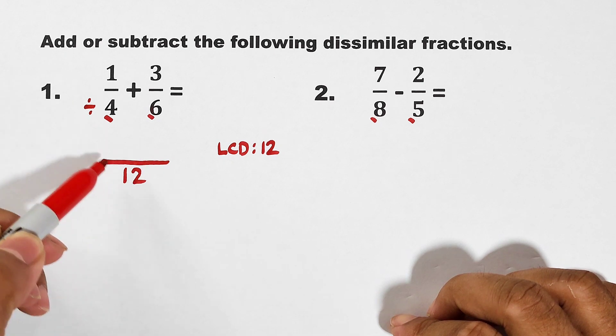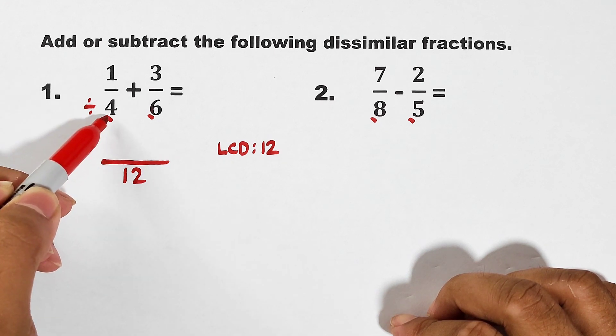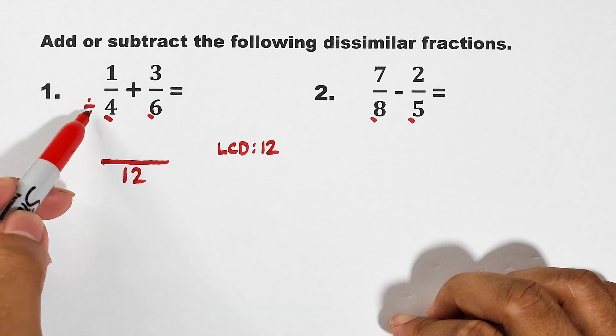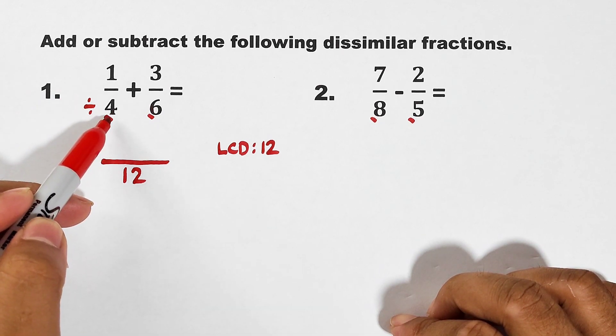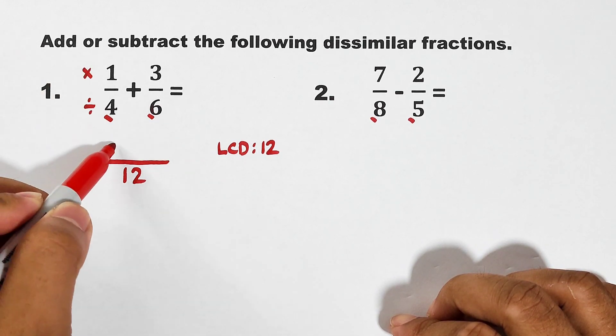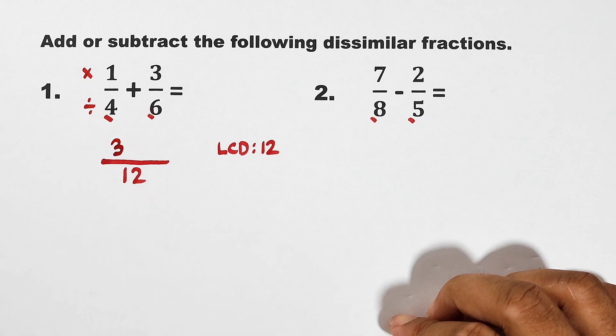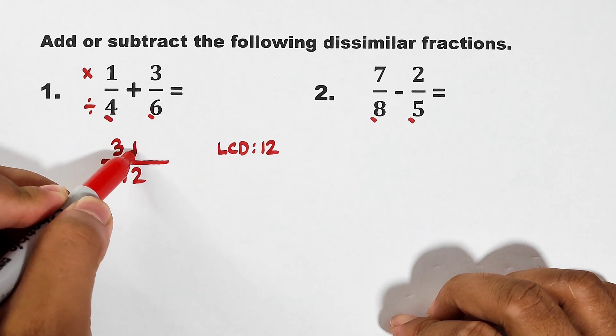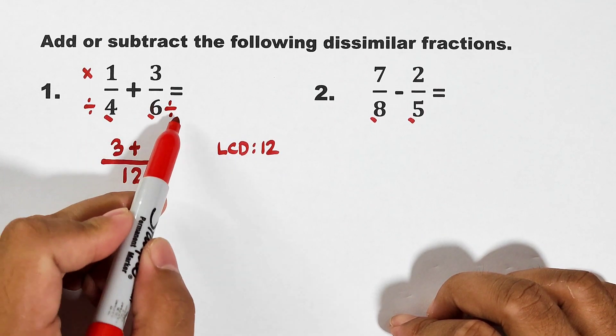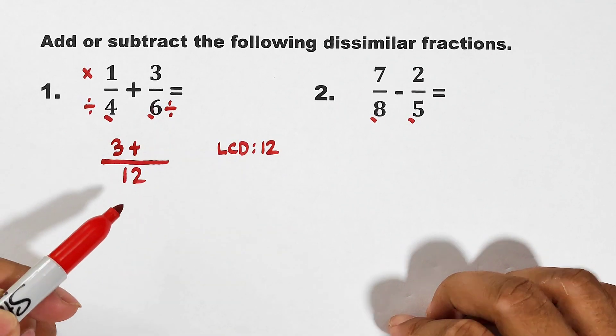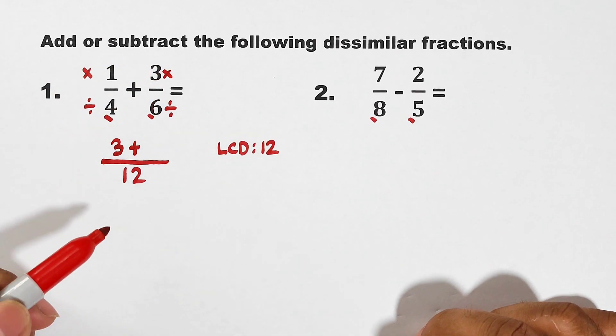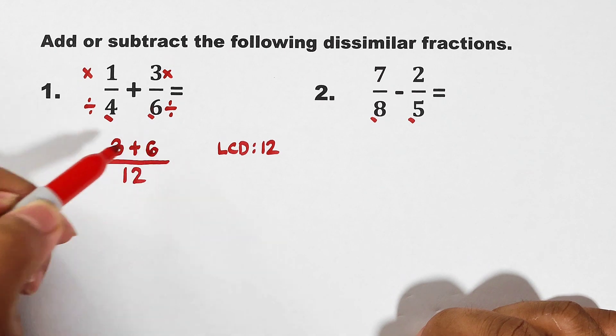Let's go. 12 divided by 4 is equal to 3. Again, let me repeat myself, 12 divided by 4 is equal to 3. And then multiply it to your numerator. Times 1, that is equal to 3. Copy your operation. Next, divide it here. 12 divided by 6 is equal to 2. Then multiply it to your numerator. That is equal to 6.